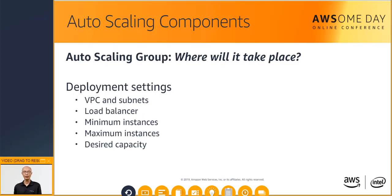An auto-scaling group is about defining where the deployment takes place and some boundaries for the deployment. This is where you define which VPC and subnets to deploy instances in, and which load balancer to interact with. You also specify the boundaries for the group. If you set a minimum of 2 and your server count goes below 2, another instance will be launched to replace it. If you set a maximum of 8, there will never be more than 8 instances in your group.